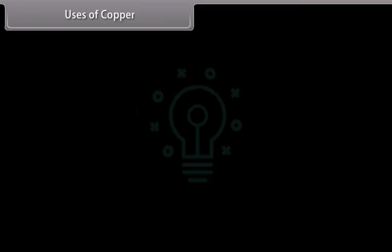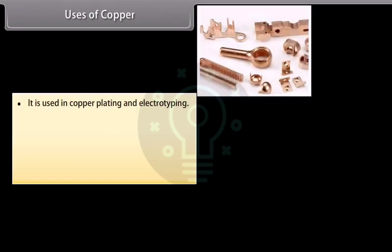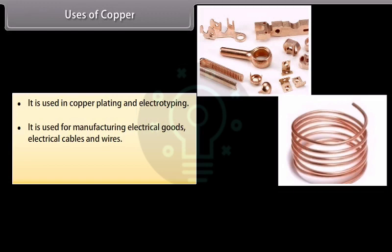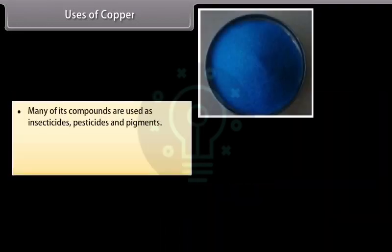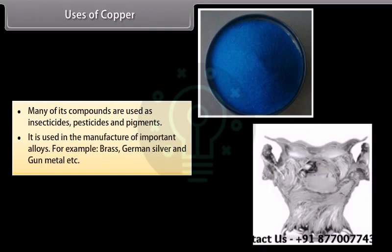Uses of Copper. It is used in copper plating and electrotyping. It is used for manufacturing electrical goods, electrical cables and wires. It is used for making vacuum pans, heating utensils and calorimeter. Many of its compounds are used as insecticides, pesticides and pigments. It is used in the manufacture of important alloys. For example, brass, German silver and gunmetal.